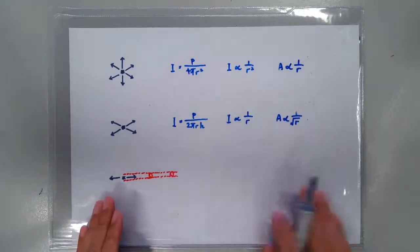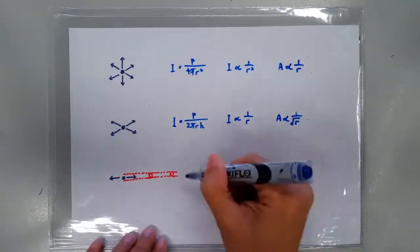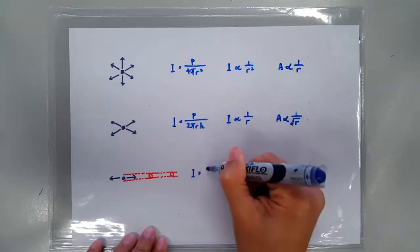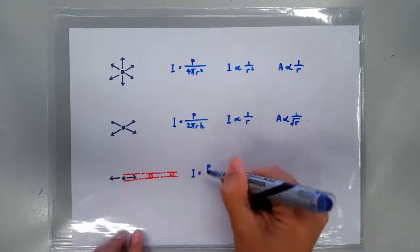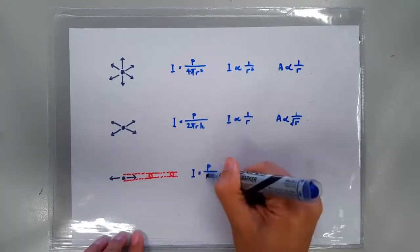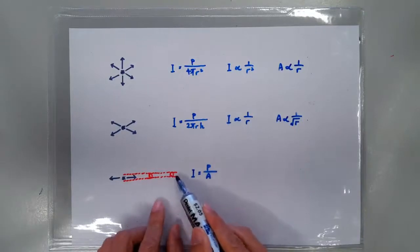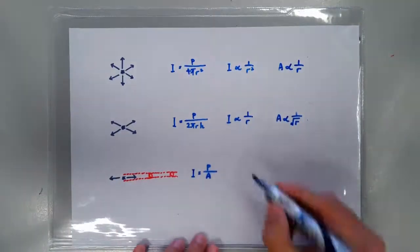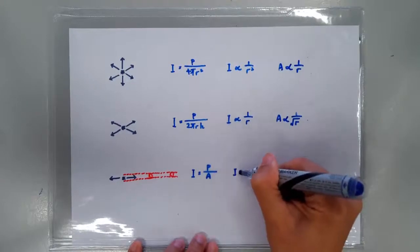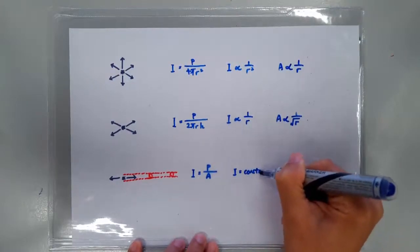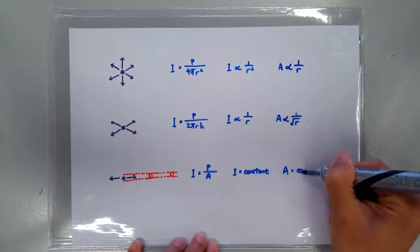So it doesn't matter how far you are away from the wave source, the intensity is still the power of the wave source divided by the area, which is a constant area. It doesn't spread. So for a 1D wave source, the intensity is constant, and so is the amplitude.